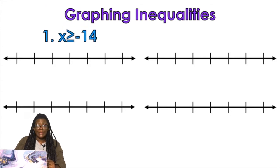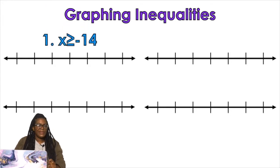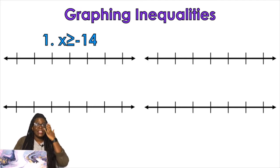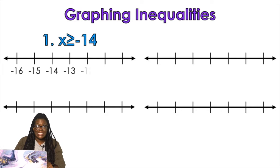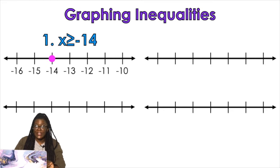Now you should try some on your own — now that you know what's up. So you're going to do x is greater than or equal to negative 14. Find negative 14 on the number line. Closed circle because there's a line under it, and shade to the right.